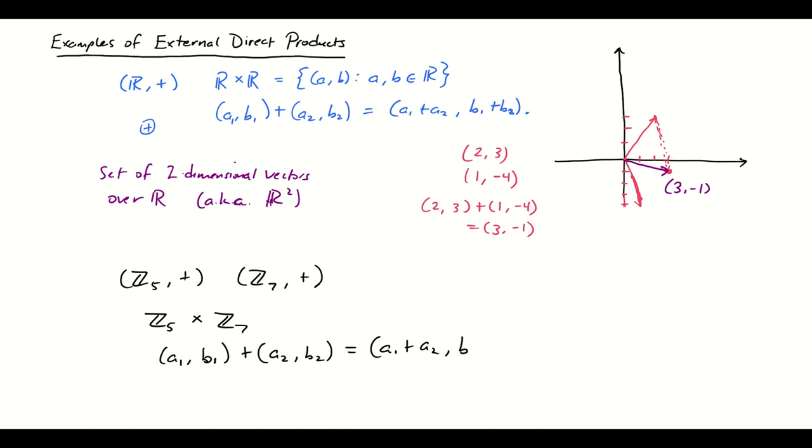That's going to be (A1 + A2, B1 + B2). But A1 plus A2, this addition is taking place in Z mod 5, so I got to make sure I'm doing that mod 5. And then B1 plus B2, that's taking place in Z mod 7.